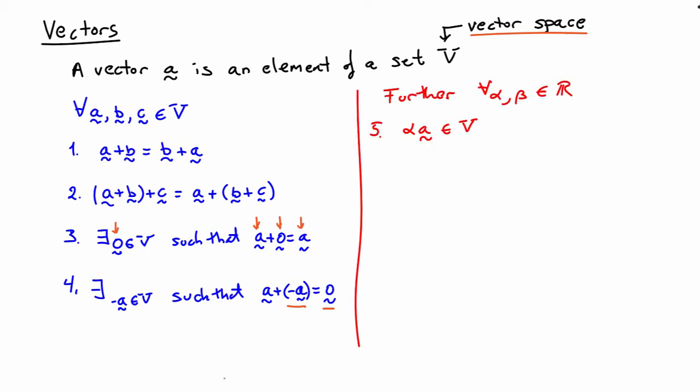In continuum mechanics we additionally work with real vector spaces, so if we have scalars alpha and beta which are real numbers, then multiplying a scalar times a vector should still give a vector. Also, if we multiply a vector by the number one, we get back the original vector. And if we multiply a vector by a scalar and then by another scalar, it doesn't matter if we multiply the scalars together first and then multiply into the vector, or do it one at a time — similar to the associative rule for addition.